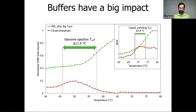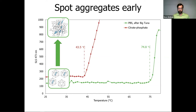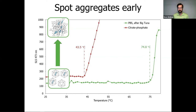UNCLE also lets you look at aggregates during a thermal ramp. Simultaneously with genome ejection, we were able to look at aggregate formation as temperature increased, because the static light scattering of our 473 nm laser also increased. We can assign a T-agg right where the SLS intensity starts to rise. The citrate phosphate buffer was already aggregating at room temperature, and that aggregation got significantly worse during thermal ramping, starting at about 43.5 degrees Celsius. Whereas in PBS, the AAV9 didn't start aggregating until about 75 degrees Celsius — much more thoroughly stable.